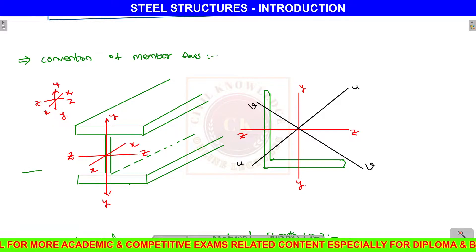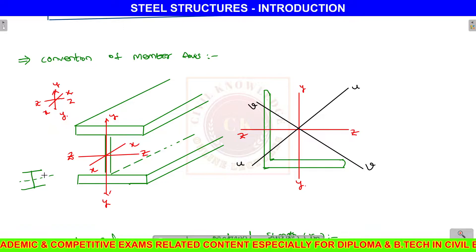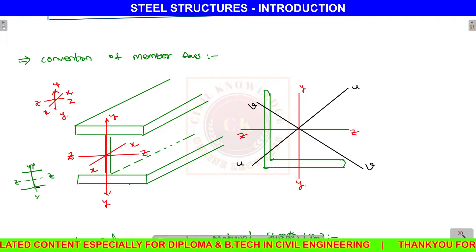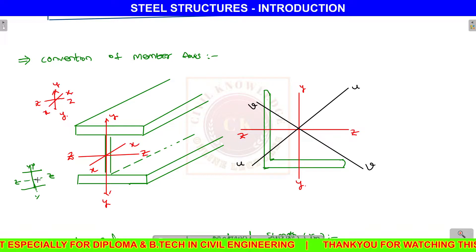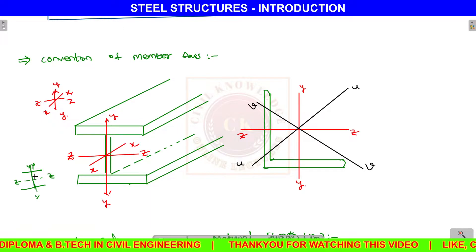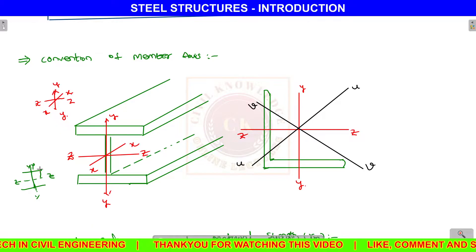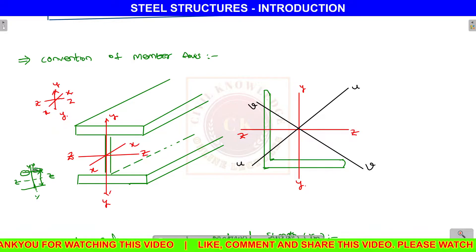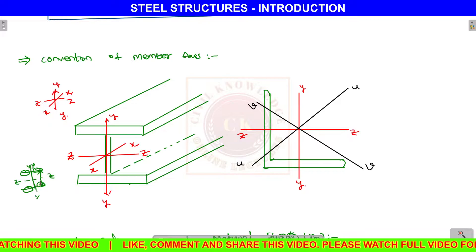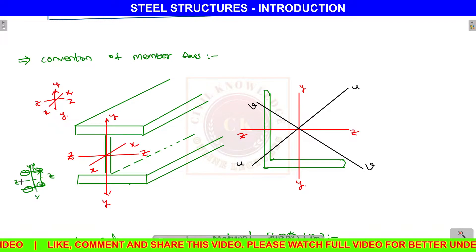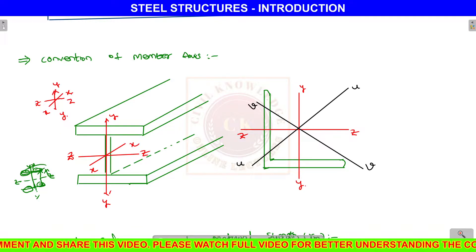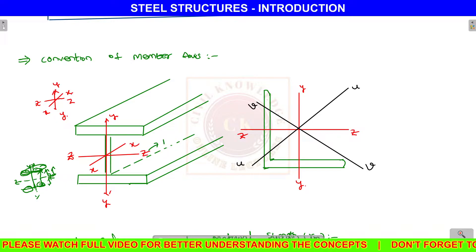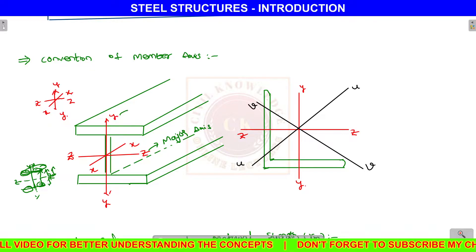Suppose there is an I-section. This has a Z axis, Y axis, and the designation of major axis and minor axis. The ZZ axis is where the area is more concentrated — that is the major axis. The YY axis, where the area is less concentrated, is the minor axis.